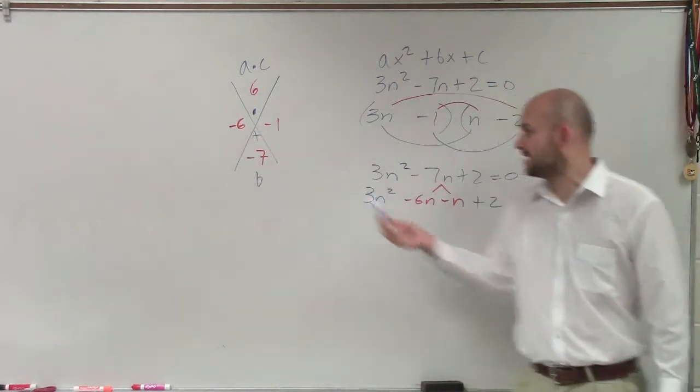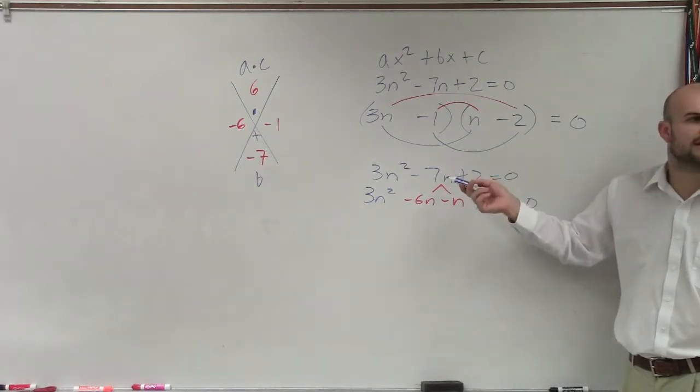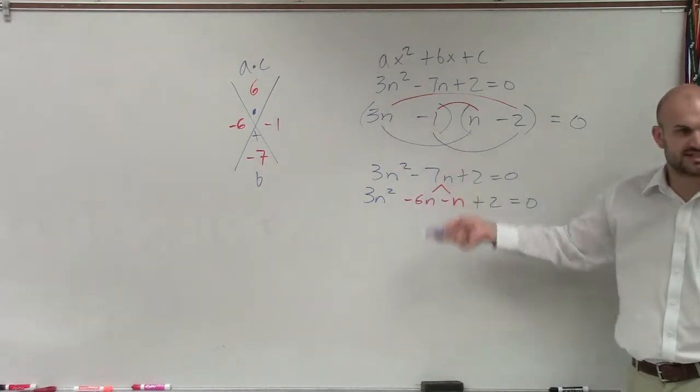All I did was I took these numbers and I replaced the middle term. Negative 6n minus n is still negative 7n. These are equivalent equations.